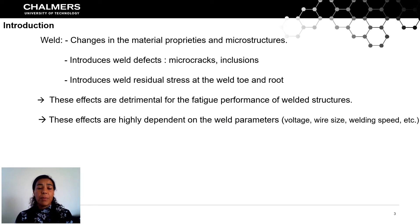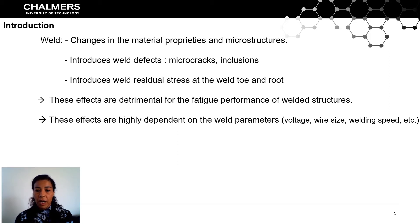Welding is a heat and thermo-mechanical process that introduces changes in the material properties and microstructure, such as the hardness and yield strength of the material. Welding also introduces weld defects, microcracks, and inclusions at the welded area, and introduces stress concentration and residual stresses at both the weld toe and root. All of these effects are detrimental for the fatigue life and performance of as-welded structures, and are highly dependent on the weld parameters.